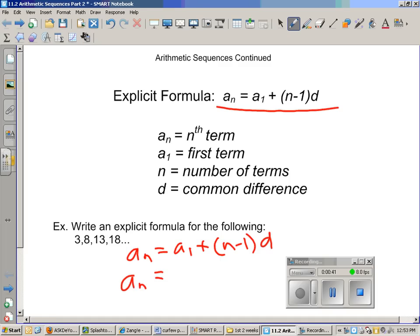We know a_1, because a_1 is the first term, and the first term is 3. Plus, in parentheses, we have n minus 1. n stands for the number of terms, but we don't know how many terms because they didn't ask for any. So again, that stays as a variable.